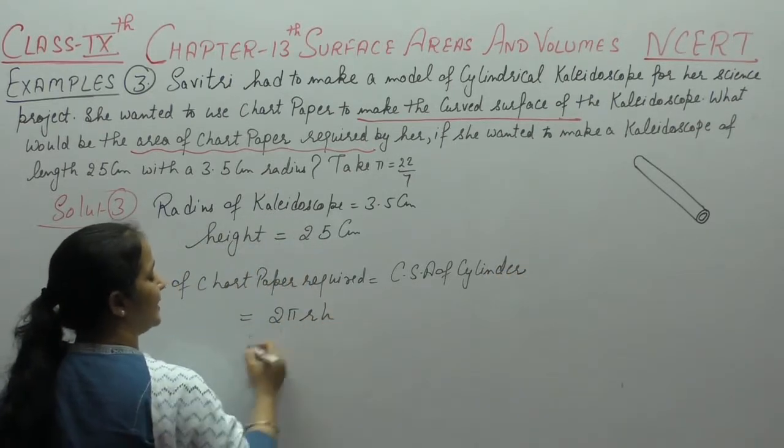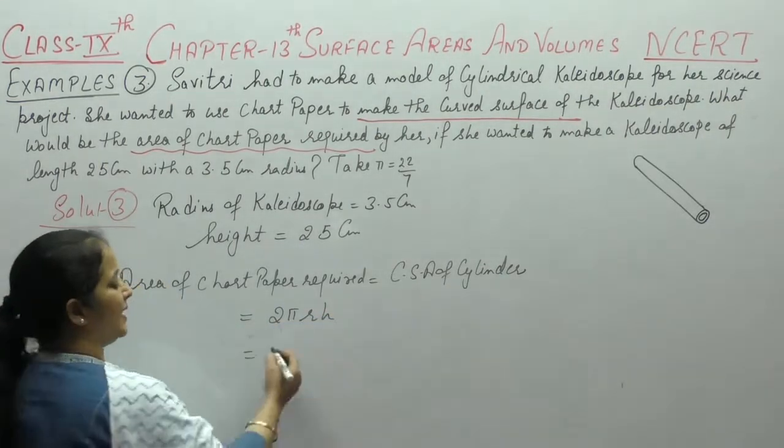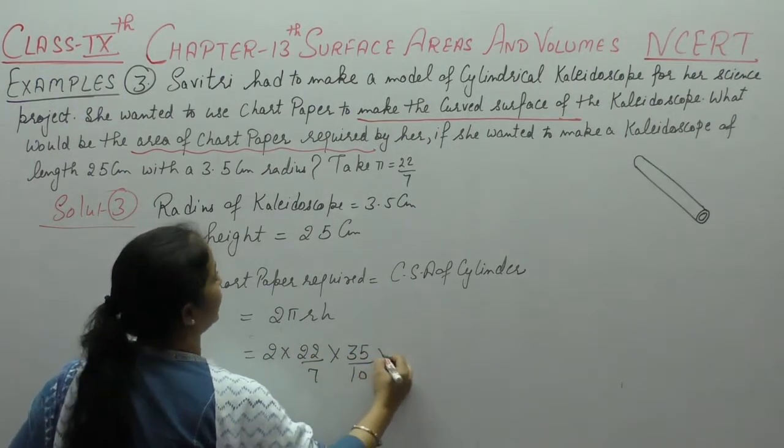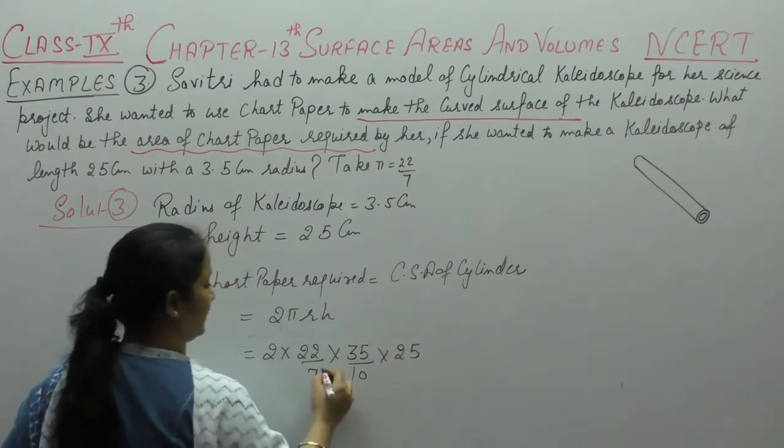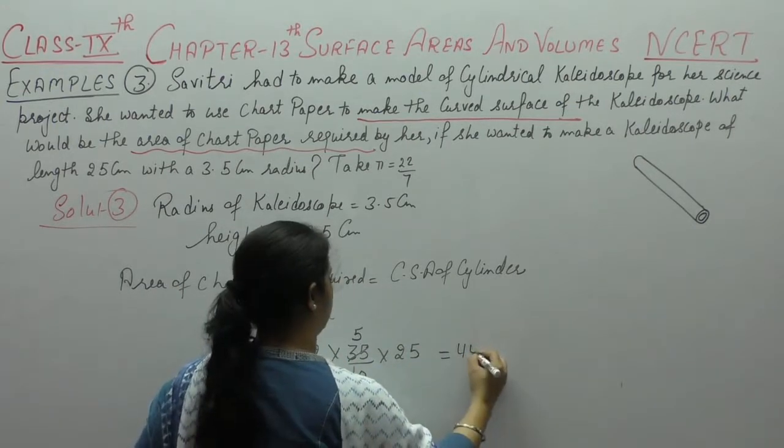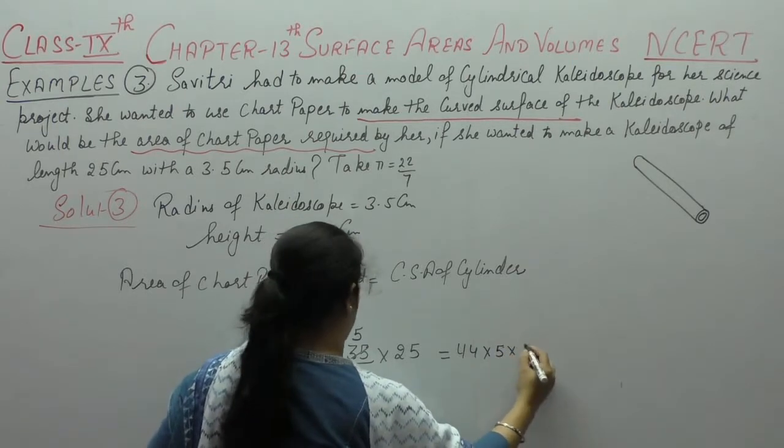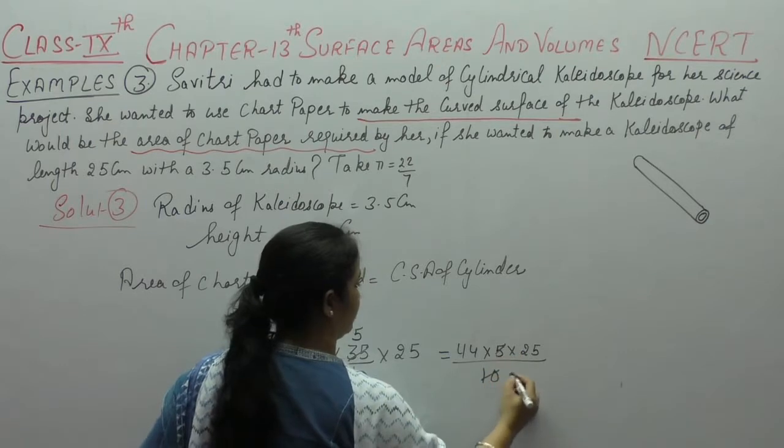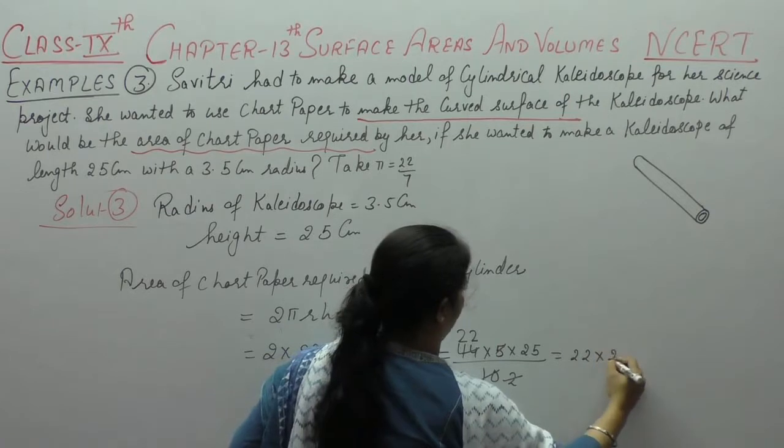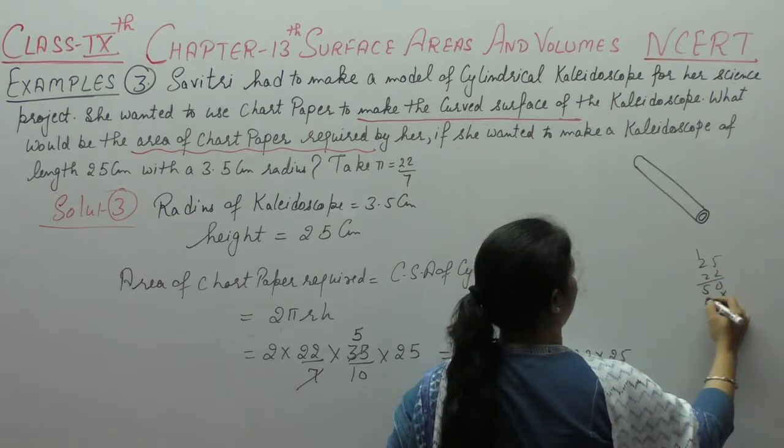2 pi r h. Curved portion of the chart paper is covered. This is why we have curved surface area found. 2 pi, we have used it, 22 by 7. Radius is 35 upon 10. Height is 25. Seven fives are 35. 22 into 2, 44 into 5, 25 divided by 10. 5 twos are 10, 2 twos are 4. 22 into 25 multiply. 25, 22. 5 twos are 10, 2 twos are 4 and 1 5.